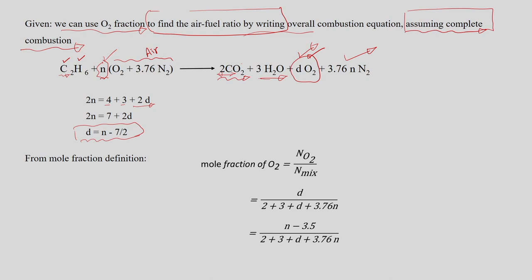Based on this, we find the number of moles of air required for the combustion process. We write the equation for the mole fraction of oxygen, since we know its value in the product gas. Using that value allows us to calculate N — the number of moles of air required.